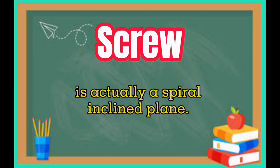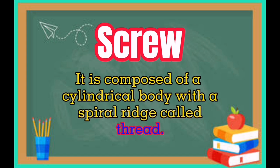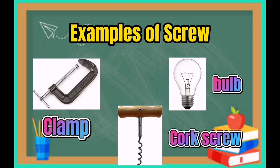The screw is actually a spiral inclined plane. It is composed of a cylindrical body with a spiral ridge called a thread. Examples of the screw are clamps, corkscrews, and bulbs.